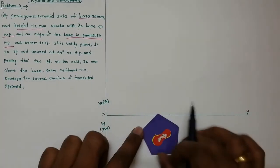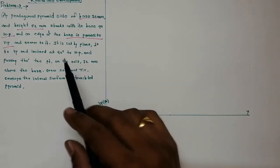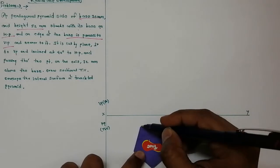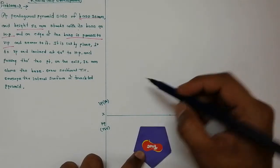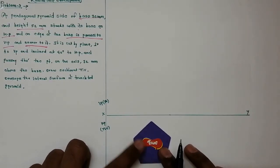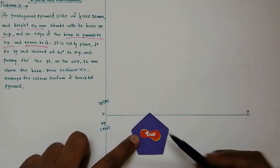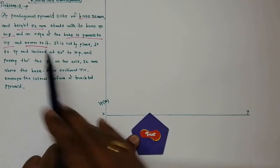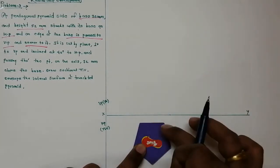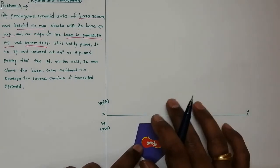This is our pentagon with five edges — we call this the base. The edge of the base must be parallel to VP, so we keep the pentagon such that this edge is parallel to VP. The second condition is that this edge must be nearer to VP. If we keep the pentagon the other way, the first condition is satisfied but the edge is away from VP, not nearer. So the correct position is where this base edge is both parallel to VP and nearer to VP.